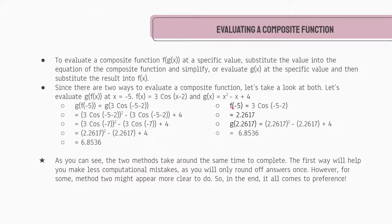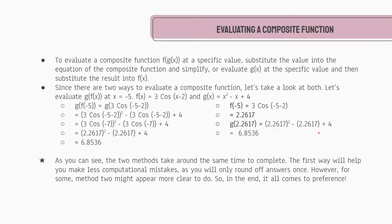Now let's look at the second way. First, we solve for f(−5) = 3cos(−5 − 2). Using radians on your calculator, you should get approximately 2.2617. Now we take this answer and substitute it into g(x). So g(2.2617) = (2.2617)² − (2.2617) + 4. Put that into your calculator and you get the result — approximately 6.8536. As you can see, both methods give the exact same value, which means we solved it correctly.